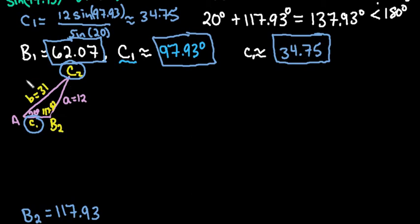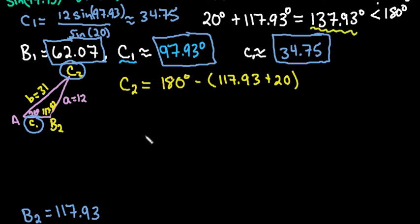So let's start by finding angle C2. So to find angle C2, what we would do is the same thing that we did to find C1. We would take 180 degrees minus the sum of the 117.93 and the 20. Or, because we had already done that, we could have just done 180 minus 137.93. And when we do this, we end up with approximately 42.07 degrees. So we can say that the second angle measure for C2 is 42.07 degrees.